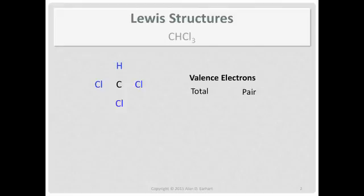For valence electrons, carbon is column 4a. Chlorine is column 7a. We have three of them. And hydrogen is column 1a. So that gives us 13 pair to distribute.